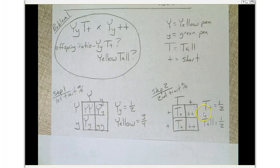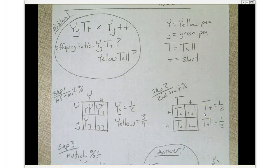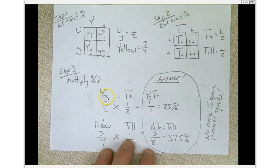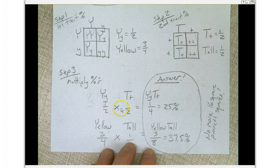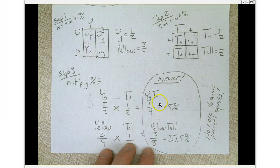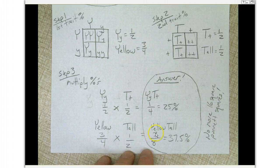The next step is to multiply them together. Big Y little y multiplied with big T little t: one-half times one-half equals one-fourth, or about 25% of the offspring are expected to have this genotype, heterozygous for two traits. As far as yellow and tall, we have three-fourths times one-half, which gives us three-eighths, or 37.5% estimated to be yellow and tall.